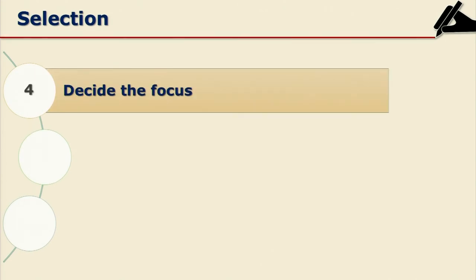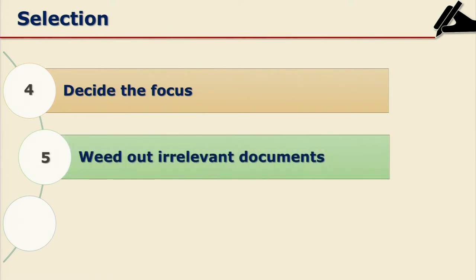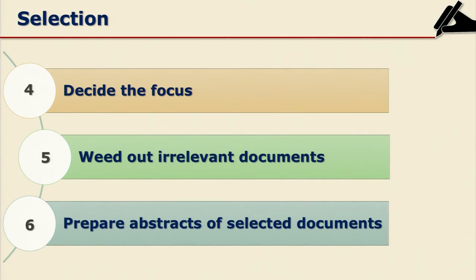After selection and categorization of the documents, you have to decide on the focus of your study. After knowing what is not there and deciding the focus, you can determine what is relevant and what is irrelevant for your studies. Accordingly, weed out the irrelevant material, documents, or unwanted references, and prepare four or five line abstracts of the selected documents.